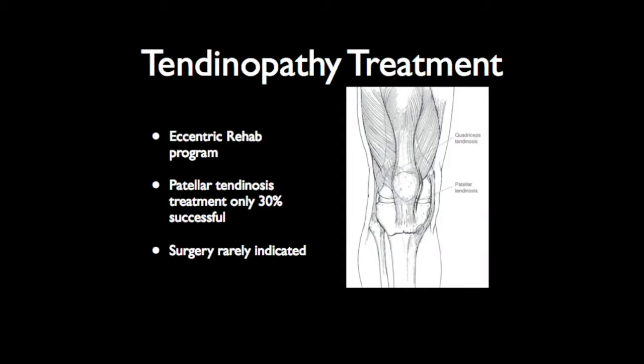What about the treatment for tendinopathies? We've found that eccentric rehab programs are very effective. Unfortunately, for jumper's knee or patellar tendinopathy, conservative treatment is only successful in about 30% of cases. An eccentric exercise — picture a bicep curl — the concentric part is bringing the dumbbell up, and the eccentric is tightening that muscle and slowly lowering it. For the quads, it might be standing on a ramp with toes facing downhill and slowly lowering yourself into a squat. That's what's effective in treating these.